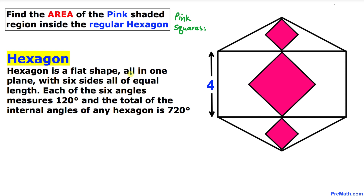Here's a quick definition of a hexagon: it is a flat shape, all in one plane, with six sides all of equal lengths. Each of the six angles measures 120 degrees, and the total internal angles of any hexagon is 720 degrees.